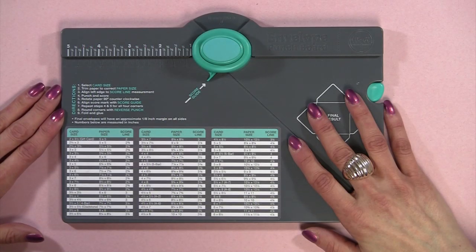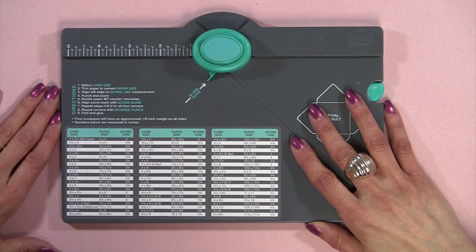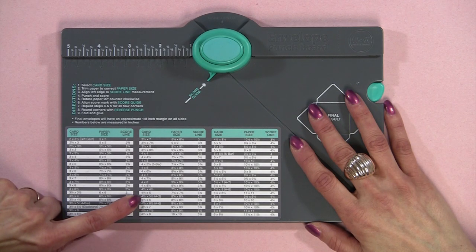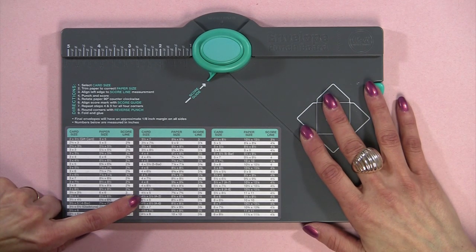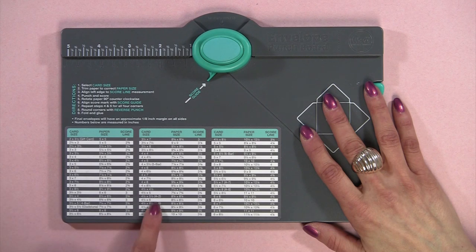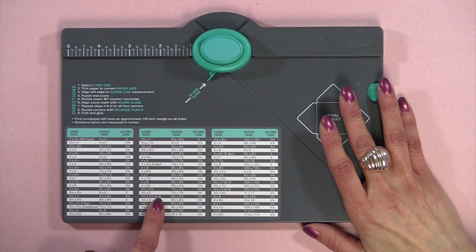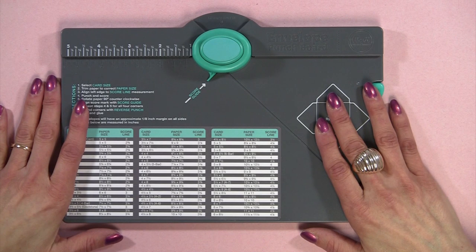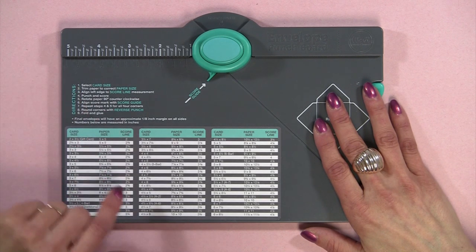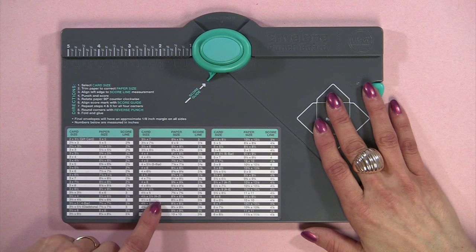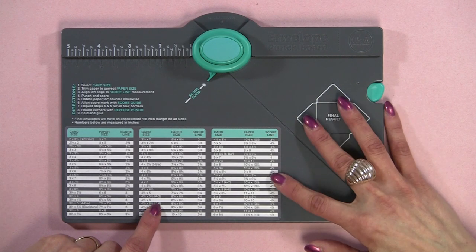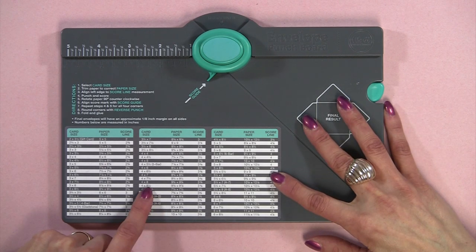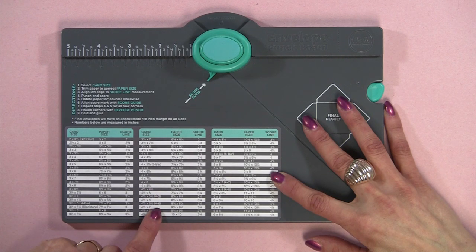The other thing I wanted to tell you is when I first saw the A2 size listed here, it says 4 and a half by 5 and a half A2. And I thought, oh my goodness, there's an error. So I contacted We Are Memory Keepers and they said they designed this envelope punch based on half inch increments. So the specialty card sizes like the A2 and the A6 are based on the envelope size that is the closest fit.